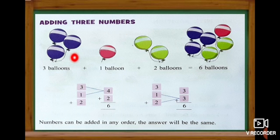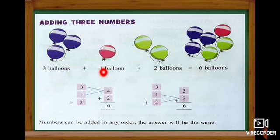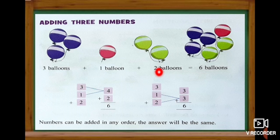Look at here. How many blue color balloons? One, two, three — three balloons. And how many red color balloons? One balloon. And green color balloons? One, two — two balloons. Now we are going to add this. Three plus one — what we get? Four. When we add three plus one we get four. And then with four we have to add number two. So keep four in the mind and two in the fingers. After four: five, six. Totally six balloons.